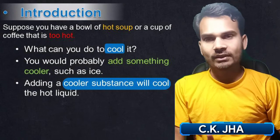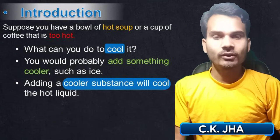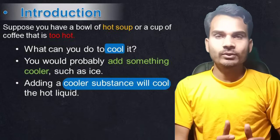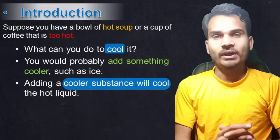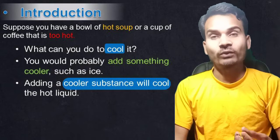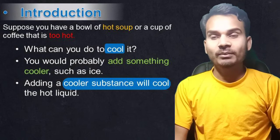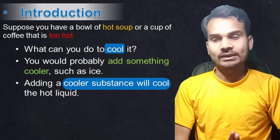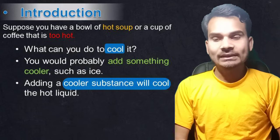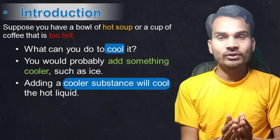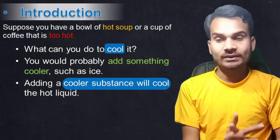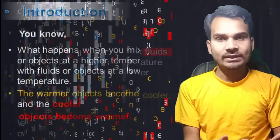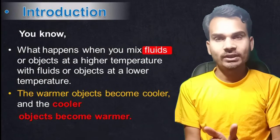First of all, an example: suppose you have a bowl of hot soup or a cup of coffee that is too hot. You have a problem of what you can do to cool it. How can you do that? You would probably add something cooler, such as ice. Adding a cooler substance will cool the hot liquid. If you add ice, the hot coffee or tea will cool.